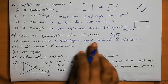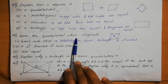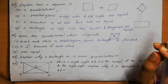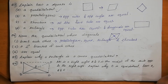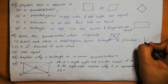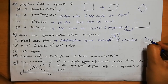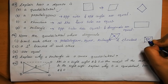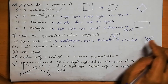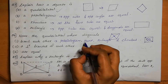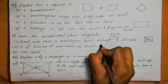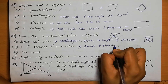Name a quadrilateral whose diagonals are perpendicular bisectors of each other. Perpendicular bisect means the diagonals are at 90 degrees to each other. This happens when all sides are equal. So the figures are square and rhombus — in these figures, diagonals perpendicularly bisect each other.